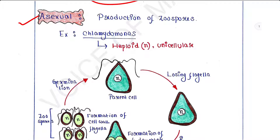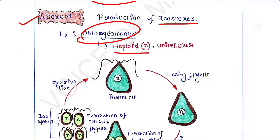The next mode of reproduction is asexual. In algae, asexual reproduction occurs by the production of zoospores. We are taking Chlamydomonas as the example here. Chlamydomonas is a haploid and unicellular algae — it is haploid because it has only one set of chromosomes.